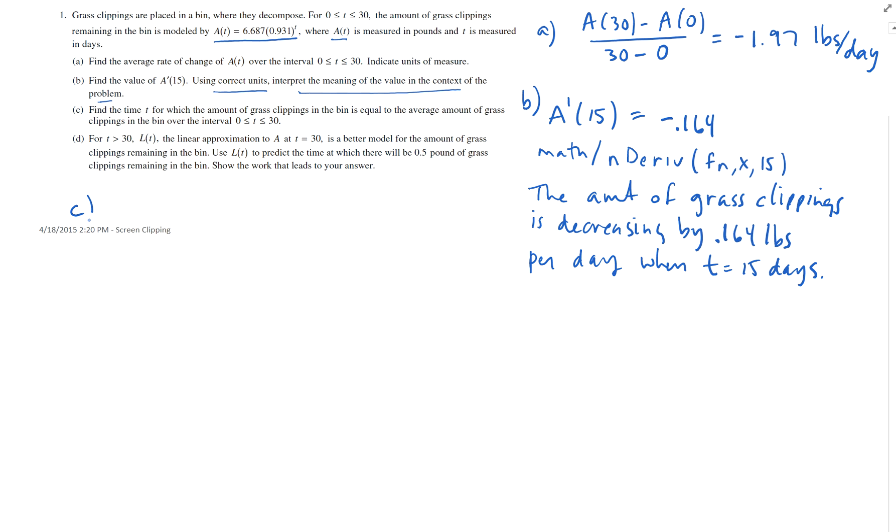Part C. Find the time at which the amount of grass clippings in the bin is equal to the average amount of grass clippings in the bin. What is the average amount of grass clippings in the bin? That's going to be 1 over 30 minus 0 for the integral from 0 to 30 of A of t. Since A of t is the amount of grass clippings in the bin, this is the average amount.